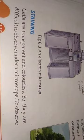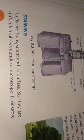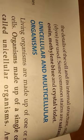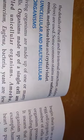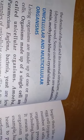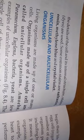Staining: cells are transparent and colorless. We need to use light to observe the details of the cell and its internal structures. To stain cells, dyes are used. Some common stains are safranine, eosin, methylene blue, and crystal violet.